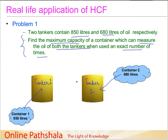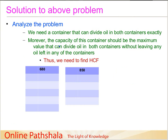Let us analyze the problem in more detail. We need a container that can divide the oil in both containers exactly — no oil should be left. We are going to divide the oil into containers of some quantity. The second requirement is that the capacity of this container should be the maximum value that can divide the oil in both containers without leaving any remainder.